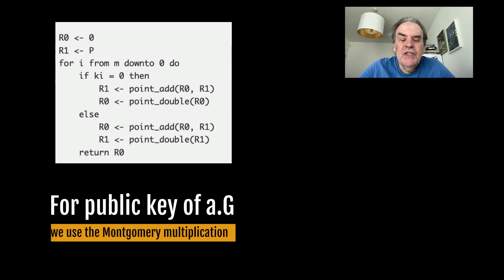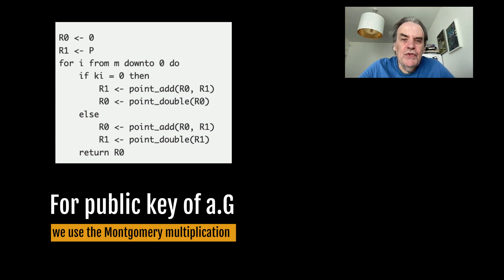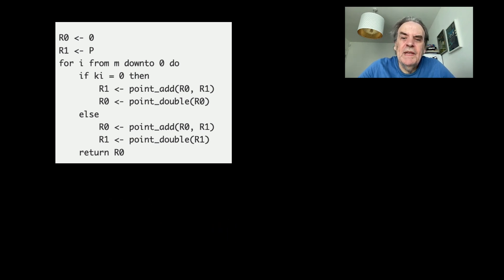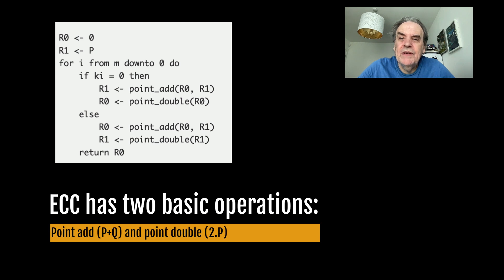In computing the public key in ECC as a × G, we use the Montgomery multiplication method, which was created by Peter Montgomery in 1985 in a paper entitled 'Modular Multiplication Without Trial Division'. The G is the base point on the curve; a is the scalar value and normally the private key. Elliptic curve methods have two basic operations: point adding P + Q and point doubling 2 × P.